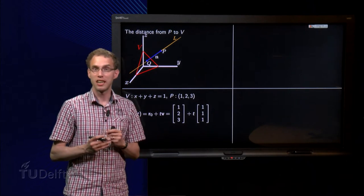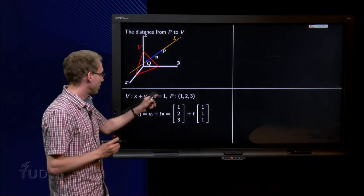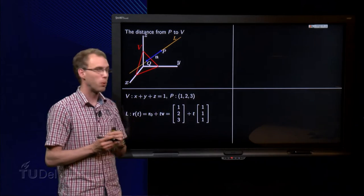First let's take an explicit example for this. So let's take V equals X plus Y plus Z equals 1, and P the point (1, 2, 3).